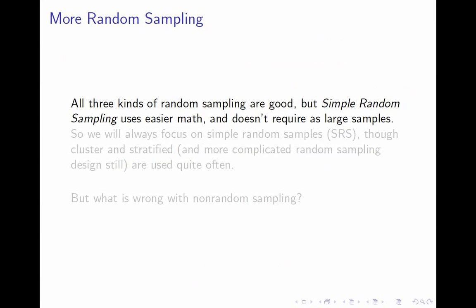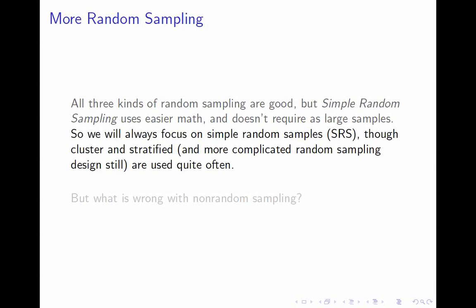So which is best? The answer is: random sampling is good and non-random sampling is bad. Among the kinds of random sampling, the differences are pretty subtle. The simple random sample uses easier math and doesn't require quite as large samples. For the rest of the semester, because it uses easier math, we will focus on simple random samples. In practice, people are often doing cluster samples within stratified samples — the math is more complicated and they need slightly larger samples, but it tends to be more practical. The short story is we'll always focus on simple random sampling, but any kind of random sampling is better than any kind of non-random.